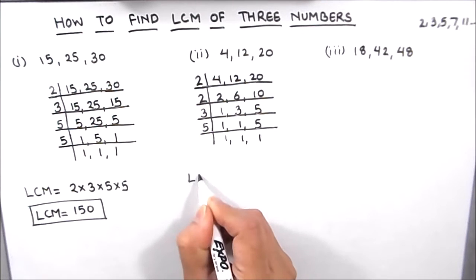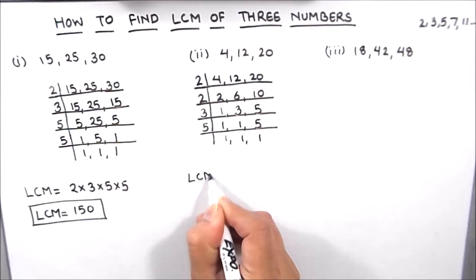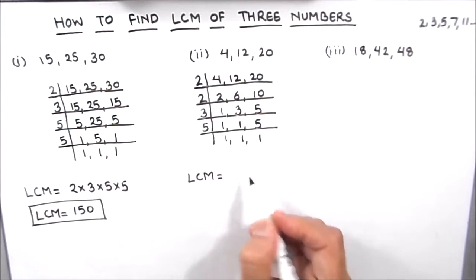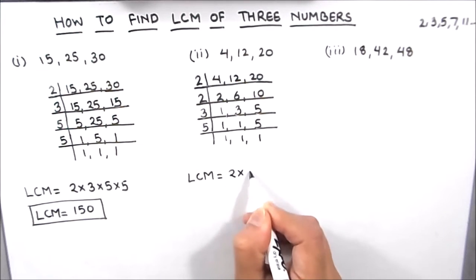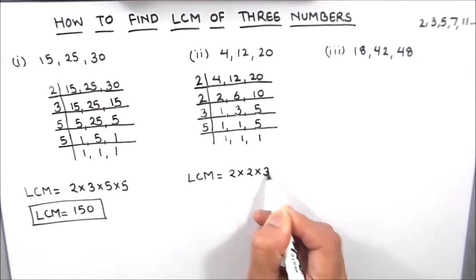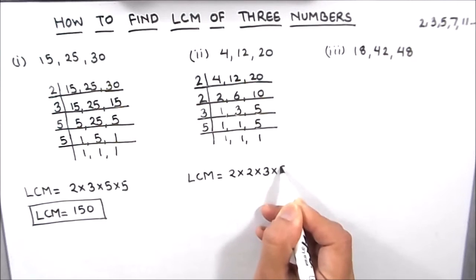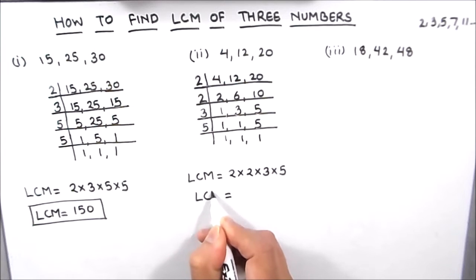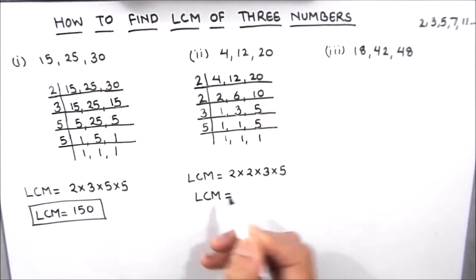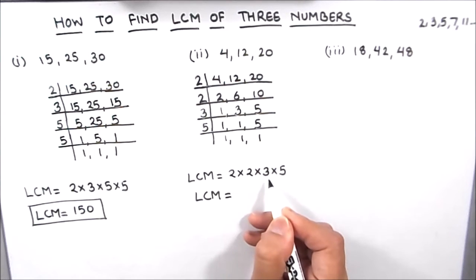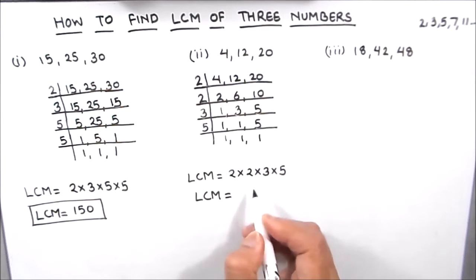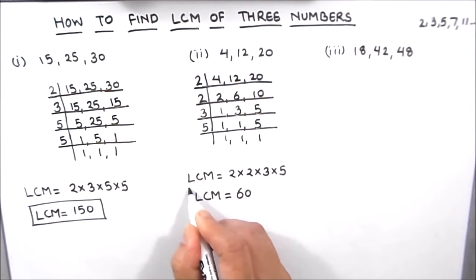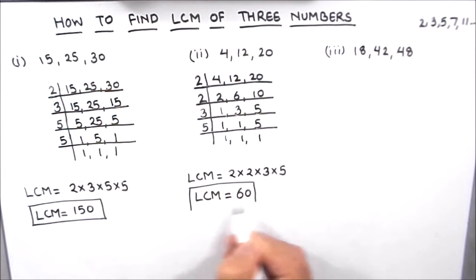For finding the LCM of the three numbers, we are going to take the product of all the numbers on the left hand side. 2 times 2 times 3 times 5 is the LCM of the three numbers. So 2 times 2 is 4, 4 times 3 is 12 and 12 times 5 is 60. So the LCM of the three numbers is 60.